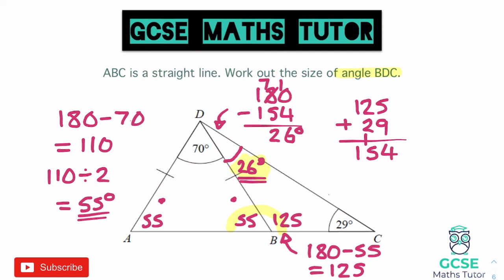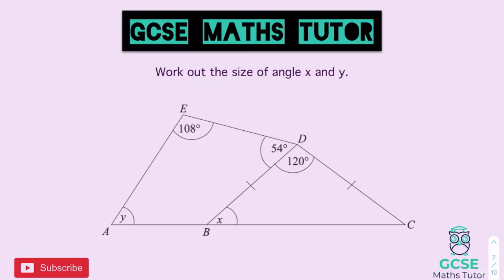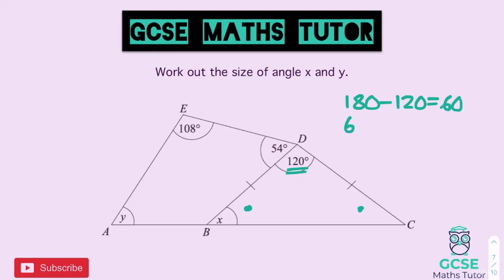This question says work out the size of angle X and the size of angle Y. Angle X is within the isosceles triangle and angle Y is within the quadrilateral. We can see it's an isosceles because it has the two lines. Since we already have one angle of 120, we do 180 take away 120, leaving 60 degrees. We have 60 degrees to split between two angles, so 60 divided by 2 leaves us with 30 degrees for each of those base angles. So X equals 30 degrees.